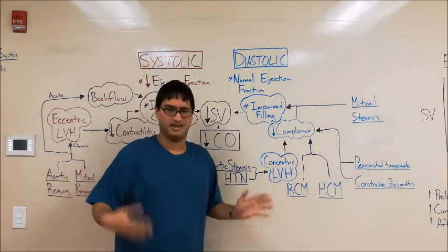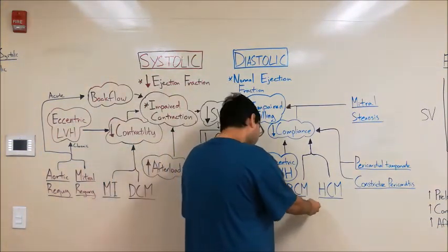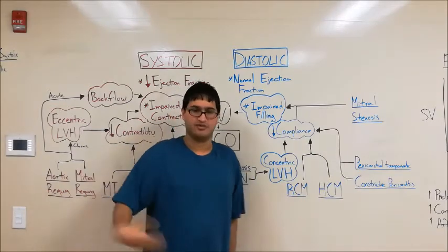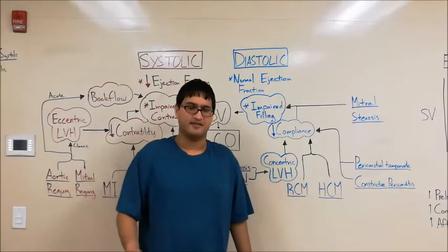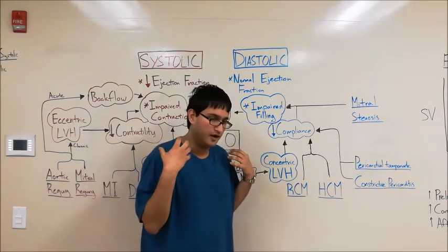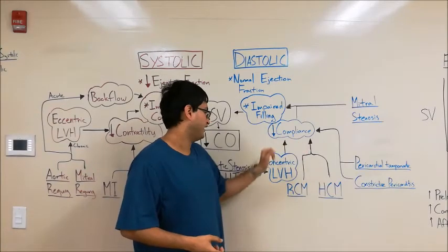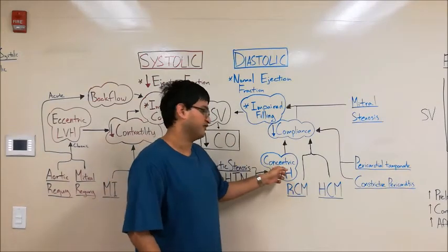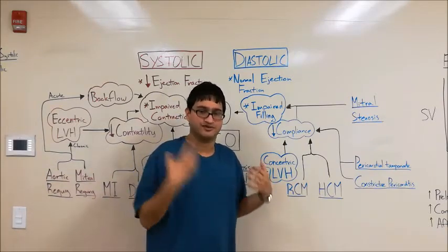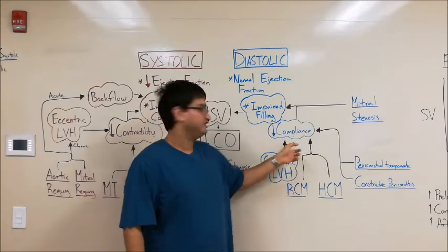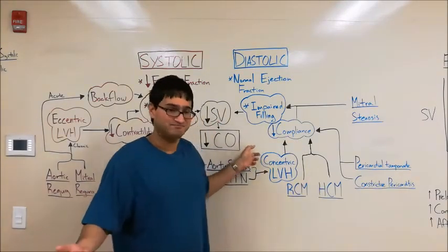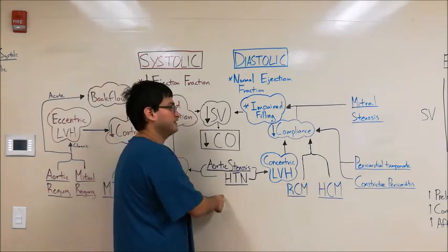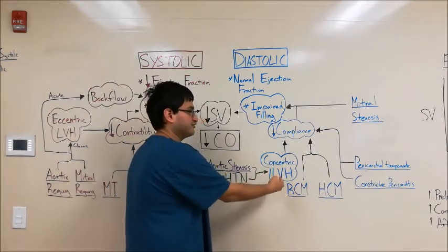Other causes of decreased compliance include restrictive cardiomyopathy and hypertrophic cardiomyopathy. In restrictive cardiomyopathy, disease processes like amyloidosis and hemochromatosis cause fibrosis and stiffening of the ventricle itself, leading to decreased compliance and decreased cardiac output. In hypertrophic cardiomyopathy, you're essentially born with a condition that produces concentric hypertrophy spontaneously — a super hypertrophic, strong, and stiff ventricle — causing decreased compliance and decreased cardiac output. Decreased compliance of the ventricle is the central concept across all these disease processes.